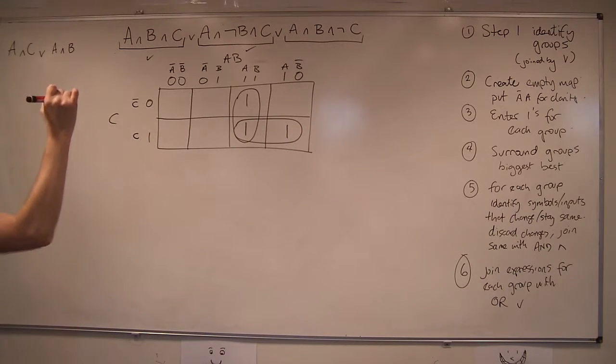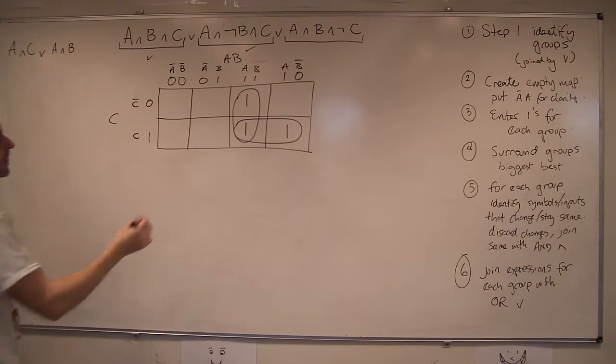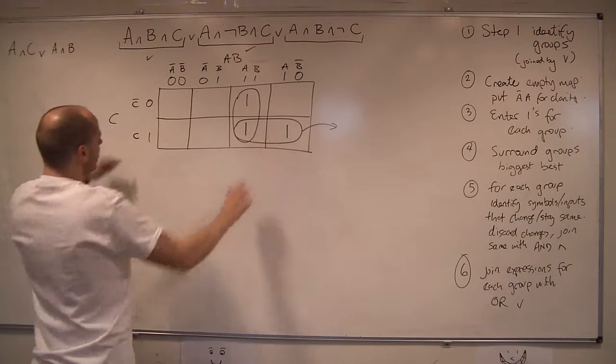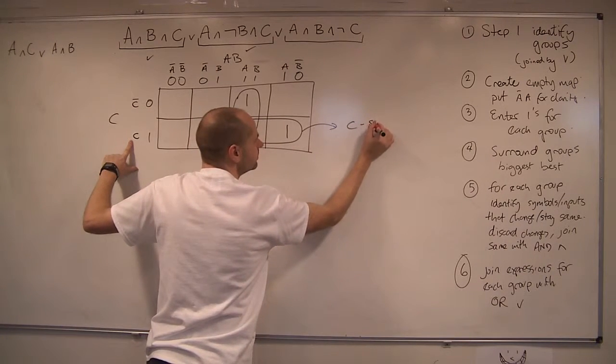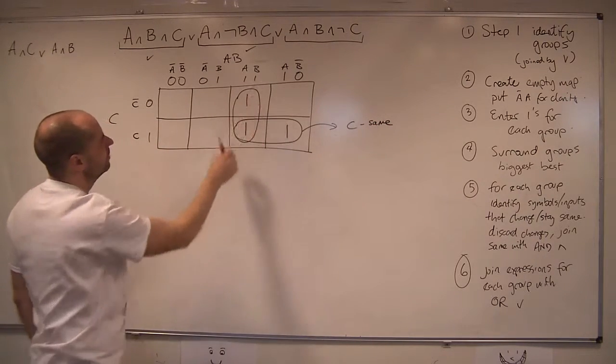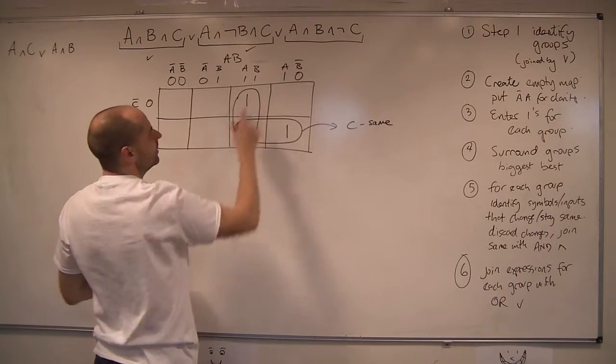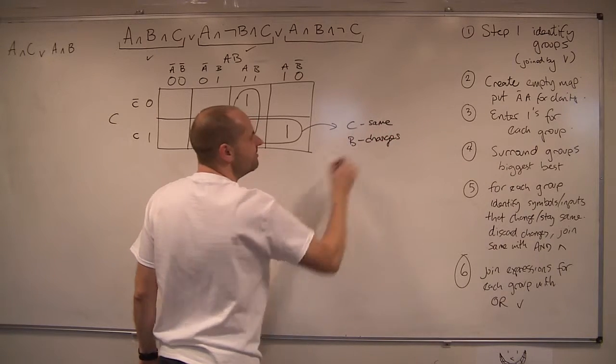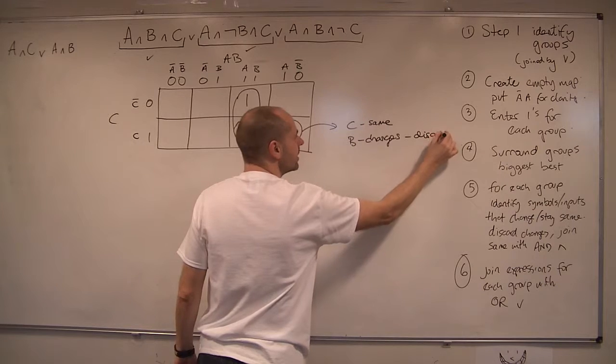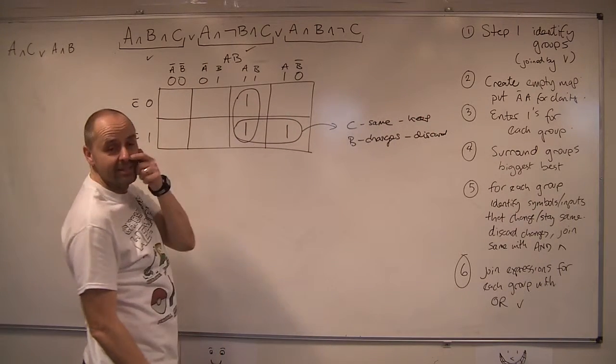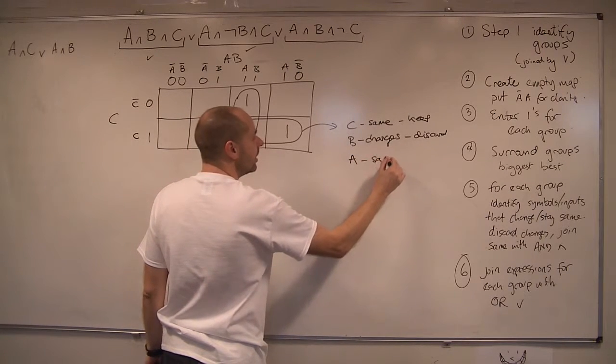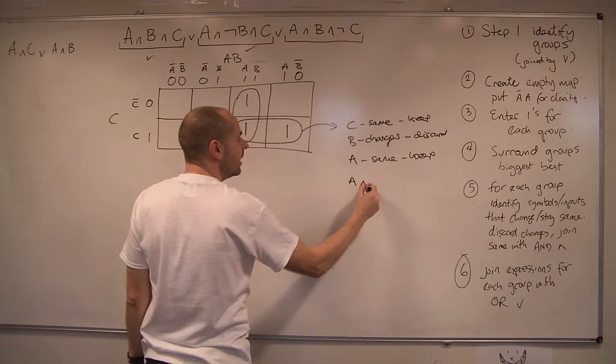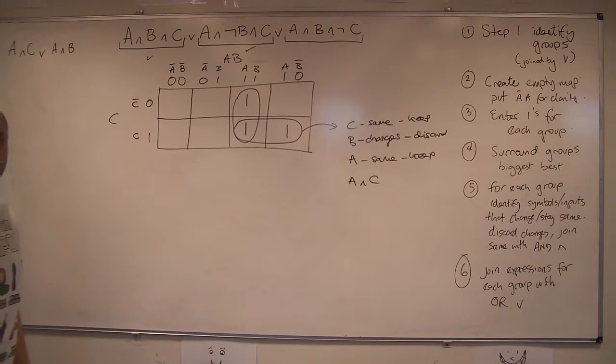Now I'm going to try and identify the symbols that stay the same and the symbols for each group that change. So let's do this bottom one here. Looking at this, it's just in one row of C. So C stays the same. So we're going to keep that one. But if we look at going across the columns, we've got A and B and then A and not B. B changes. B is normal and knotted. So B changes. So that is going to be one of our candidates for getting rid. So I'm going to discard that one. I'm going to keep that one. A stays the same. So I'm going to have A the same. So I'm going to keep it. So my expression for that part of the map is going to be A and C. Everyone happy with that? So that's done that one.